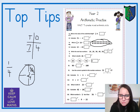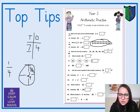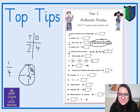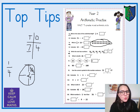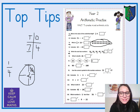Down here, another top tip: question five asks you to write the next numbers in the pattern. What do we notice about the numbers? The ones digits all have something in common — they are all four. You've got to notice what's happening with the tens each time: it goes 10, 20, 30, 40, 50. I wonder what the pattern is going to be for the next two numbers in that one — have a little think and see if you can work it out.